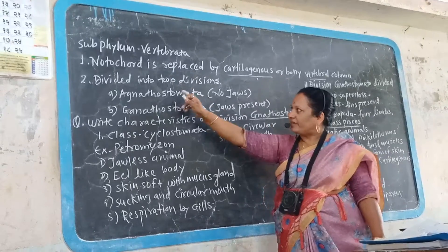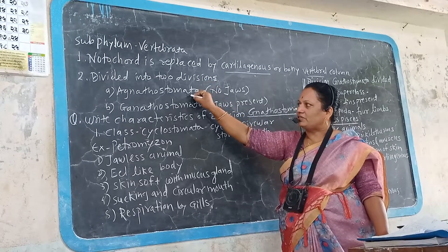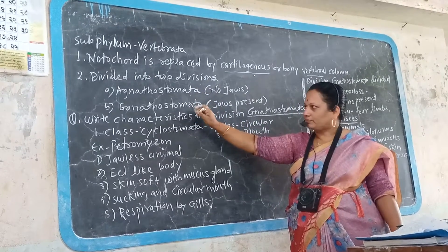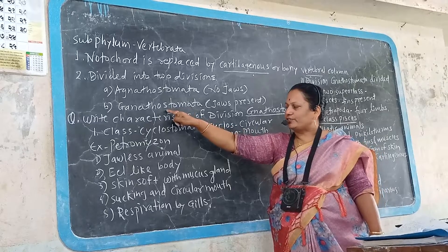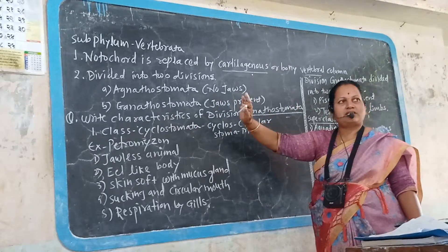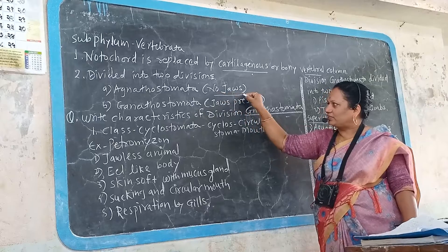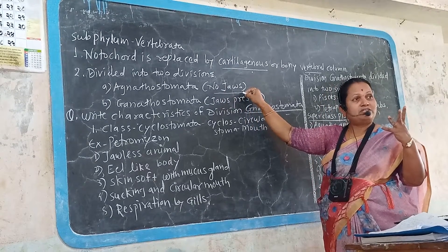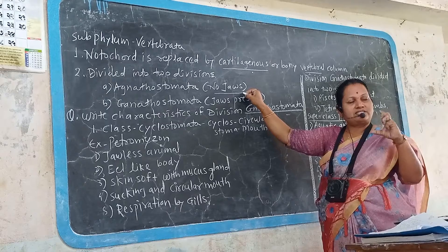Vertebrata is divided into two divisions. The first division is Agnathostomata and the second division is Gnathostomata. In Agnathostomata, 'a' means absent — so jaws are absent. Stomata means mouth and gnatho means jaws. So Agnathostomata means mouth where jaws are absent.